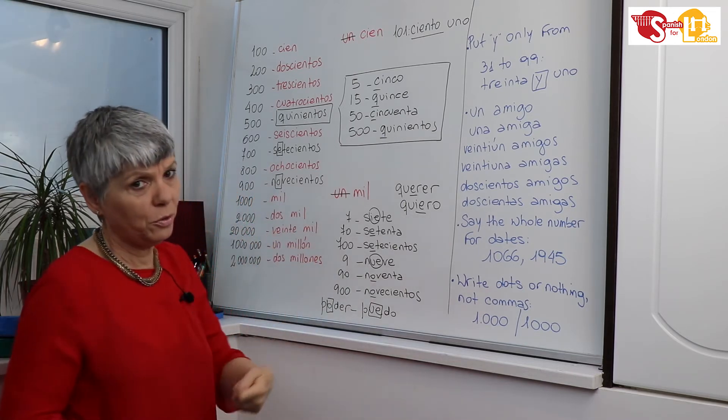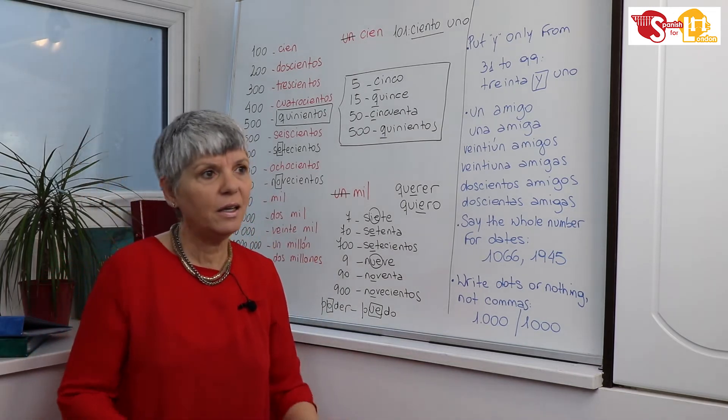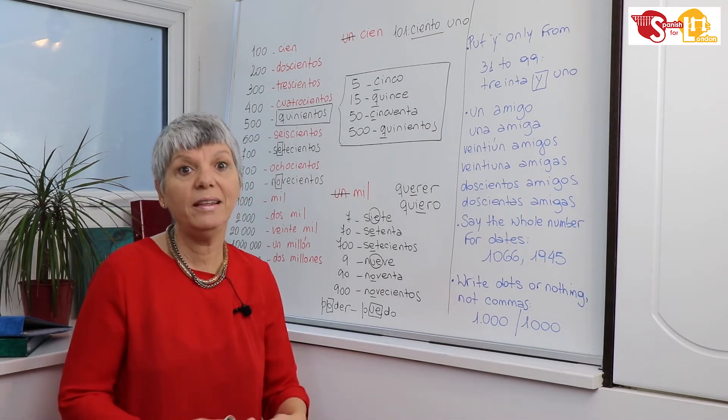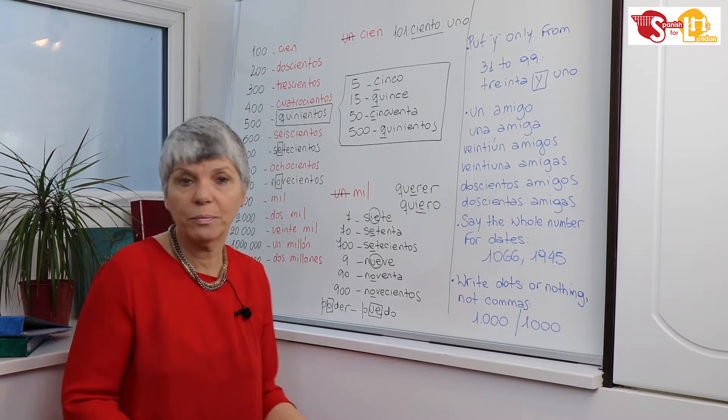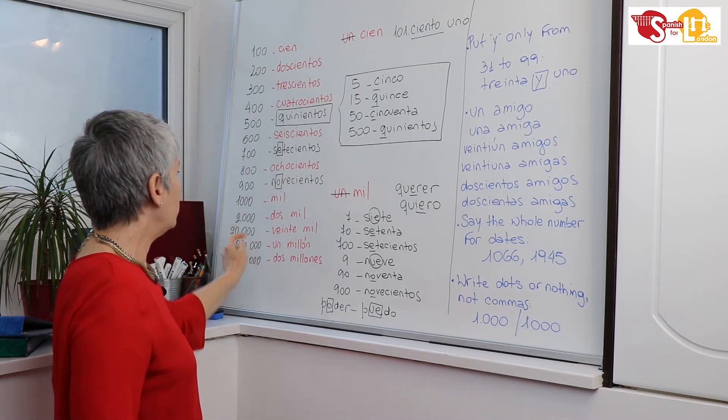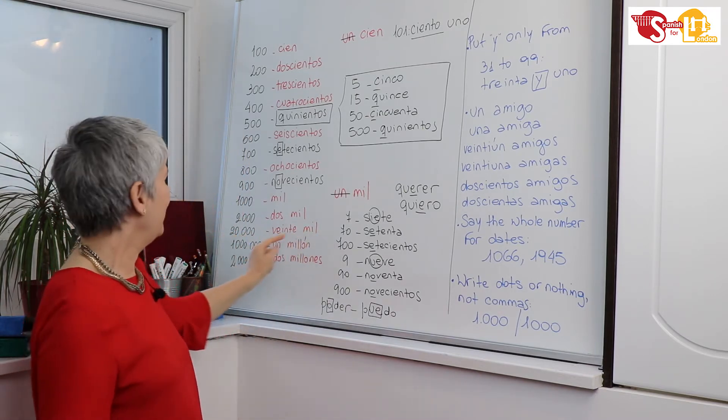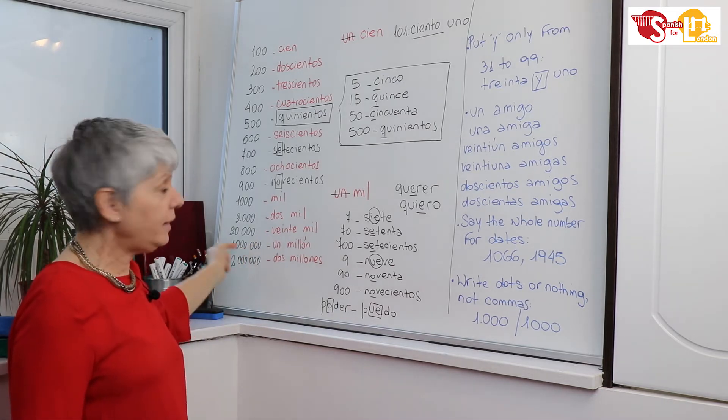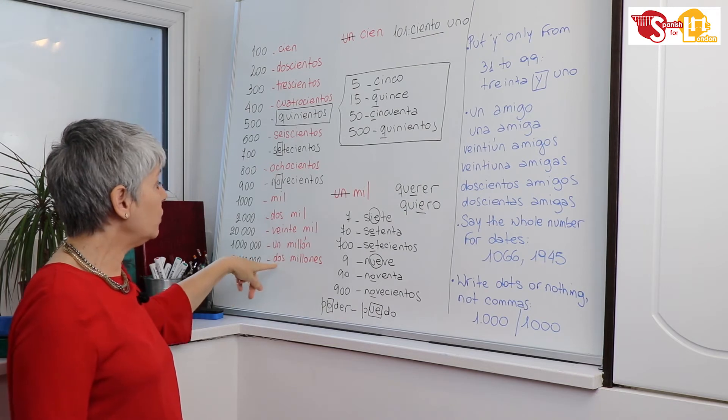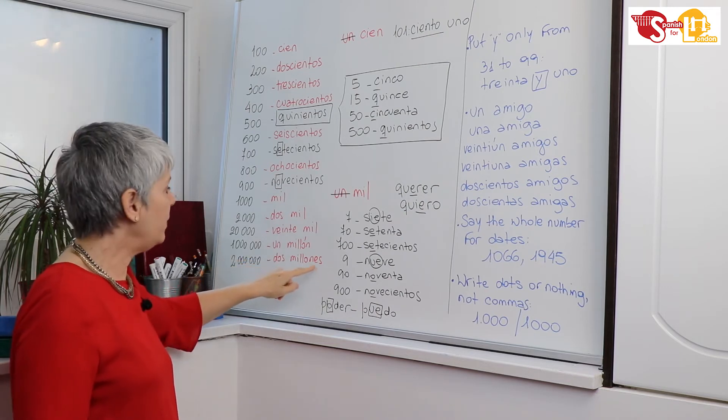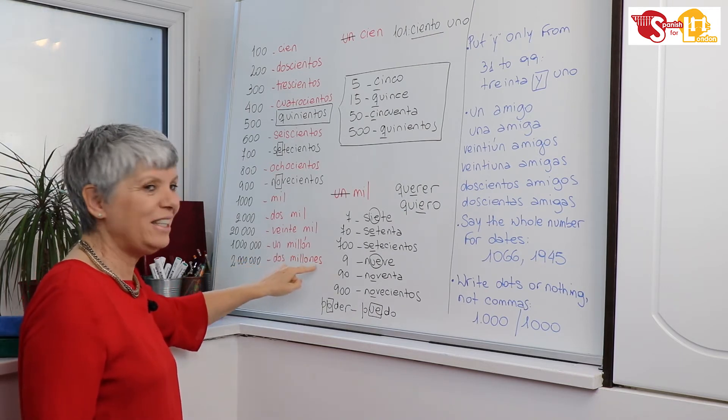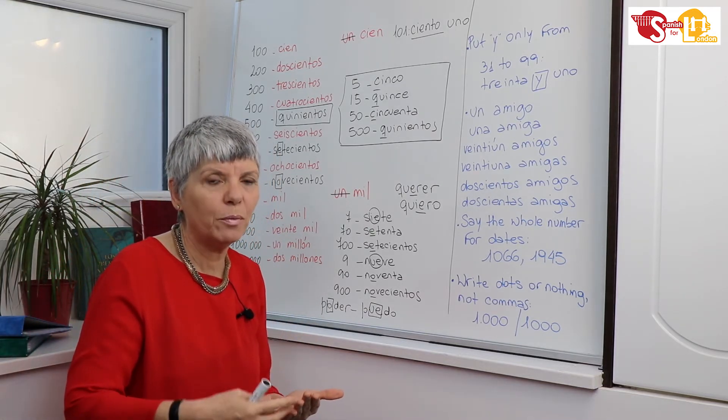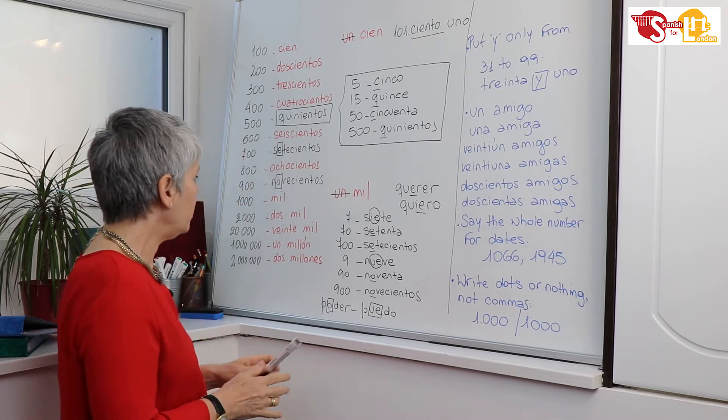Then, of course, if you want to say two thousand, say dos mil, three thousand tres mil, ten thousand diez mil, and so on. And then for twenty thousand, veinte mil. Do you see? One million is un millón, and then two million, dos millones. So we have the plural form for million. Un millón singular, but dos millones plural.